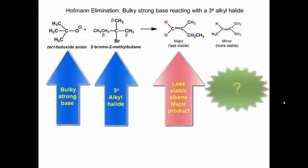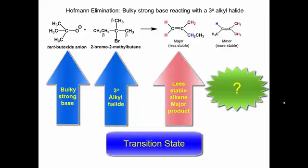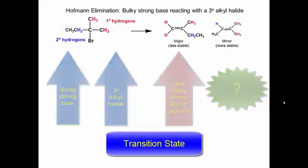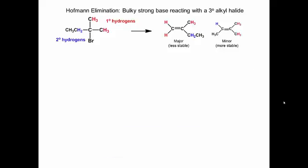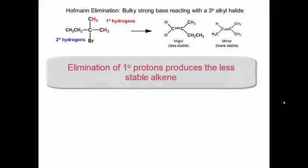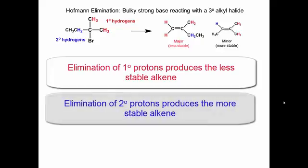The question is why? The reason for this must be in the transition state. There are two types of beta-hydrogens: primary and secondary. Notice, elimination of the primary protons produces the less stable alkene, and elimination of a secondary proton produces the more stable alkene.